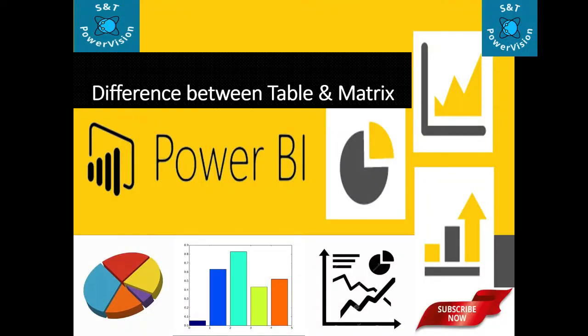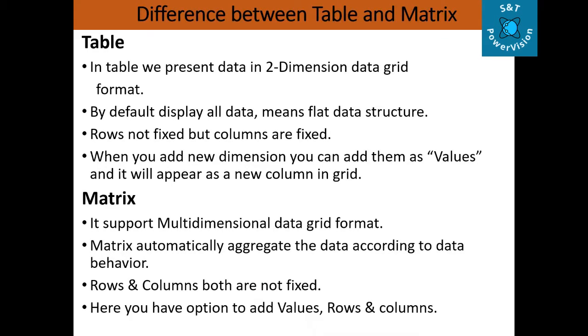Hello everyone. In this video, I will explain the difference between table and matrix. First, in a table, we present data in a two-dimensional data grid format. By default, it displays all data, meaning a flat data structure. Rows are not fixed, but columns are fixed. When you add a new dimension, you can add them as values.